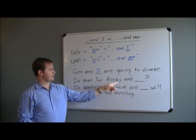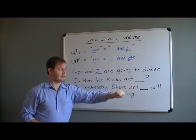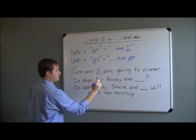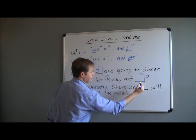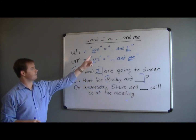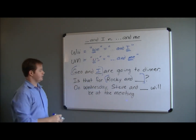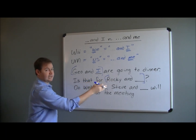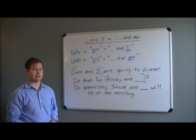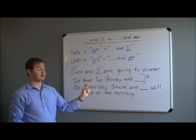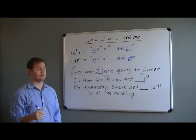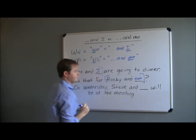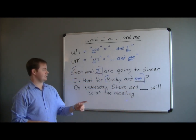'Is that for Rocky and blank?' Let's take out 'Rocky and blank' and replace it with either 'we' or 'us.' Is it 'is that for us' or 'is that for we'? If you said 'is that for us' is the correct version, you are right. That means we put 'Rocky and me' as the correct object in that sentence.